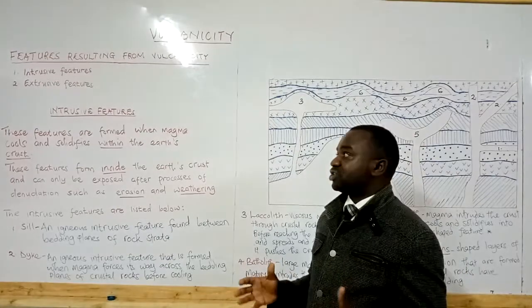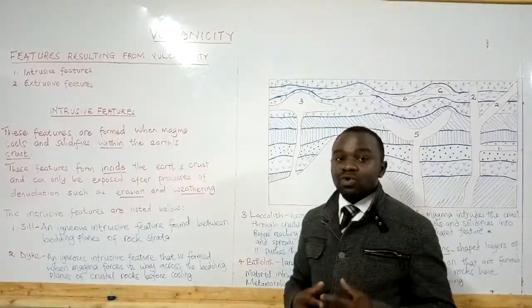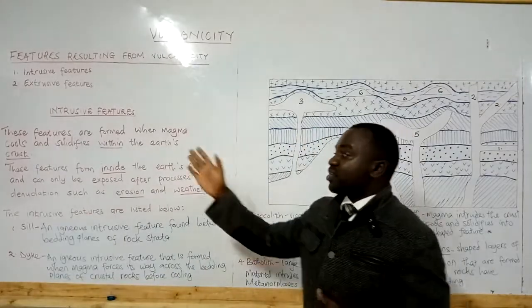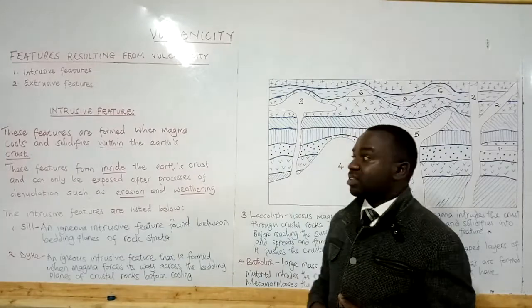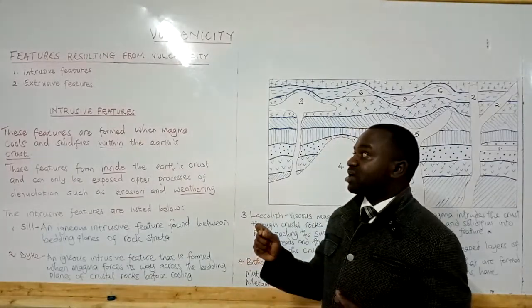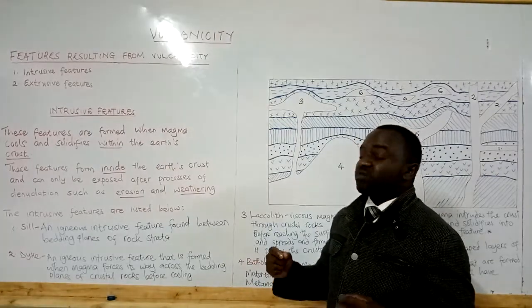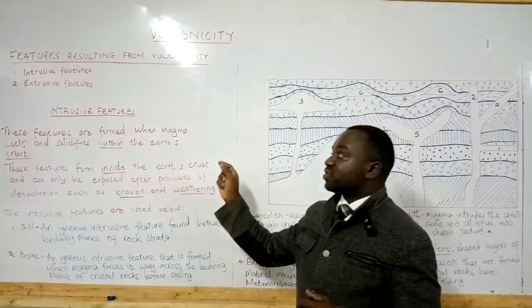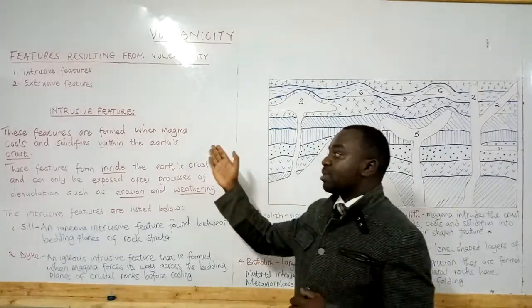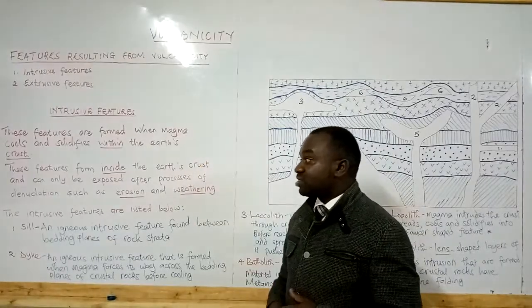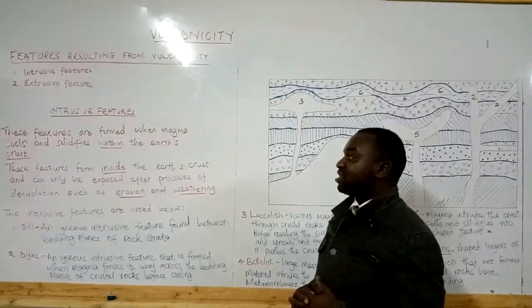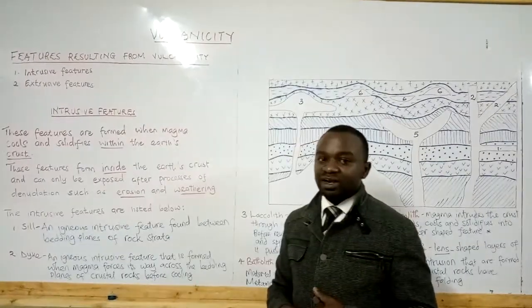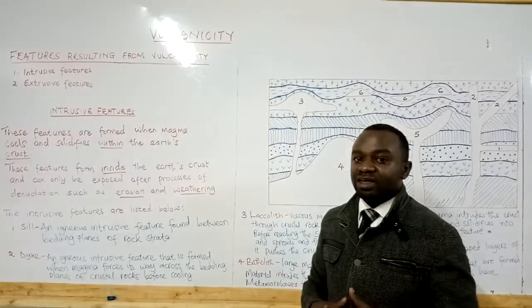So what are intrusive volcanicity features? These are features that are formed when magma cools and solidifies within the Earth's crust — that's the most important bit, within the Earth's crust. Intrusive volcanicity involves magma intruding through the crust but not reaching the surface. These features form inside the Earth's crust and can only be exposed after processes of denudation such as erosion and weathering; otherwise they remain within the crust.